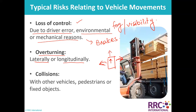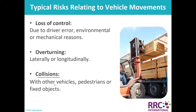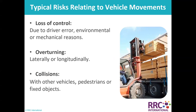For example, if we are having a forklift, the next risk is collision — collision with other vehicles on blind spots, where one vehicle is coming from one side and another from the other side, or with a parked vehicle, pedestrian, or fixed object. So we have three kinds of risks: loss of control, overturning, and collision.